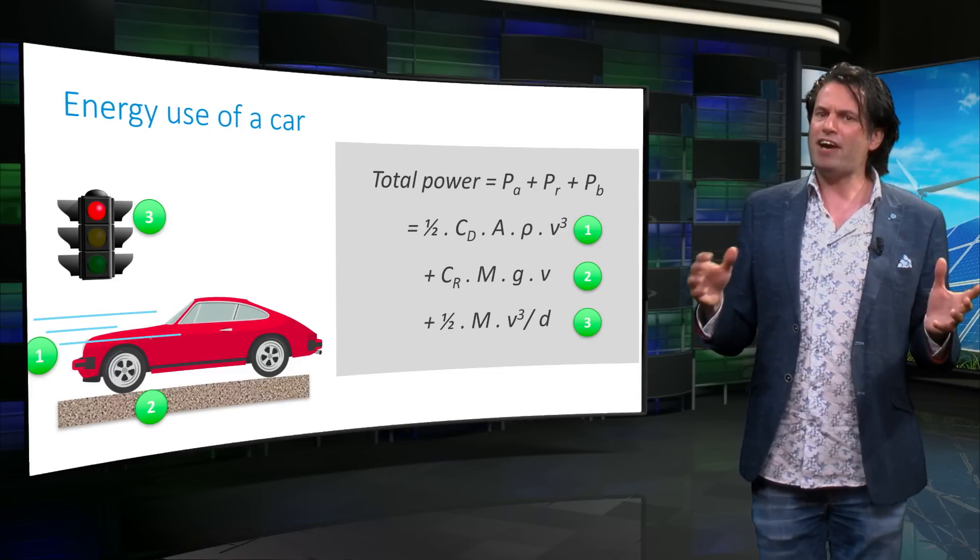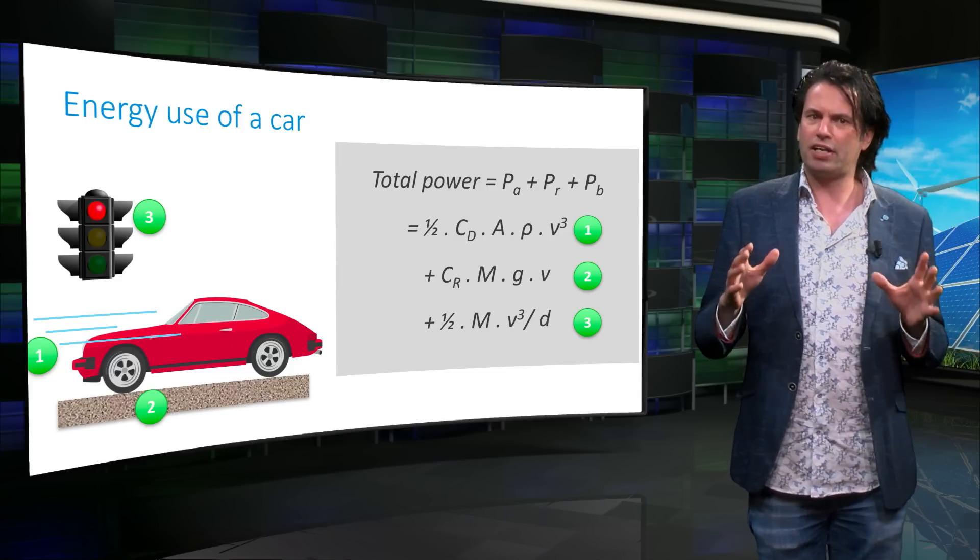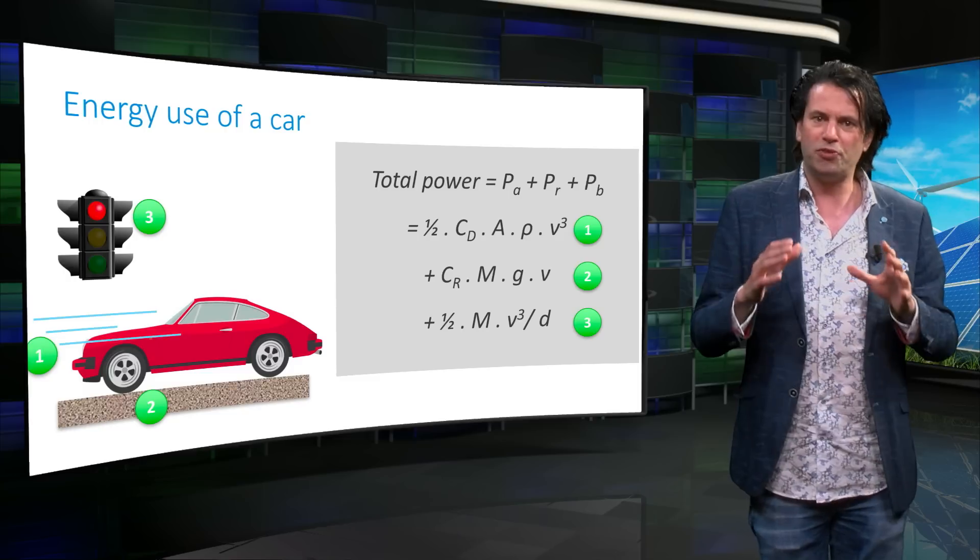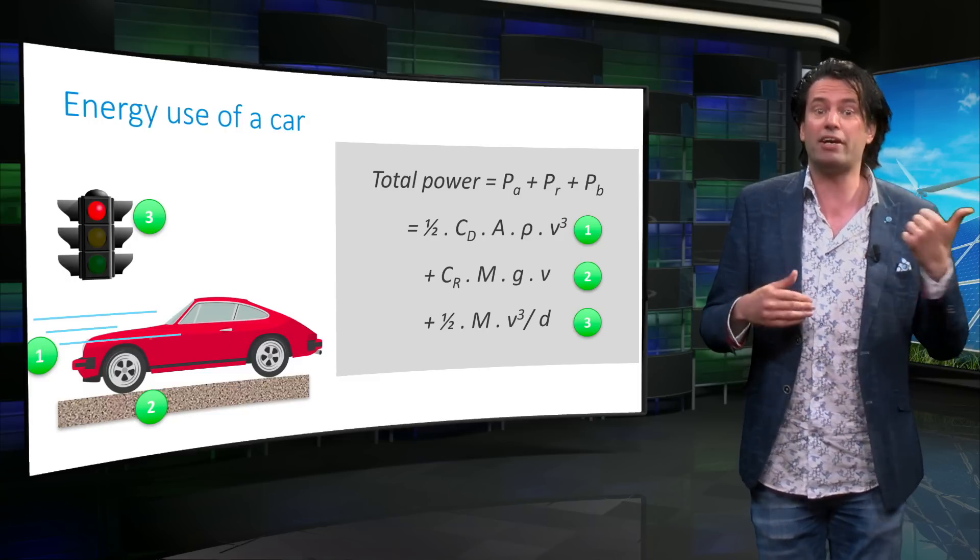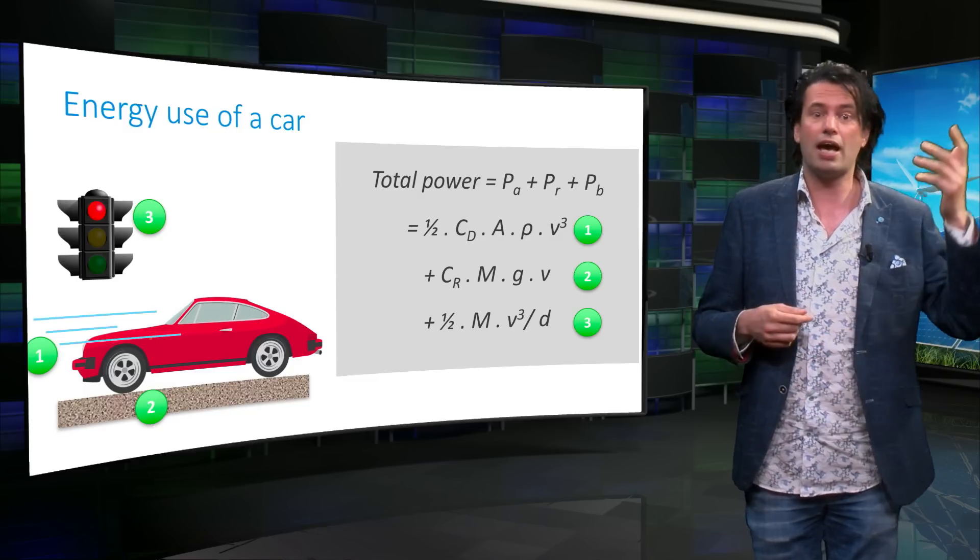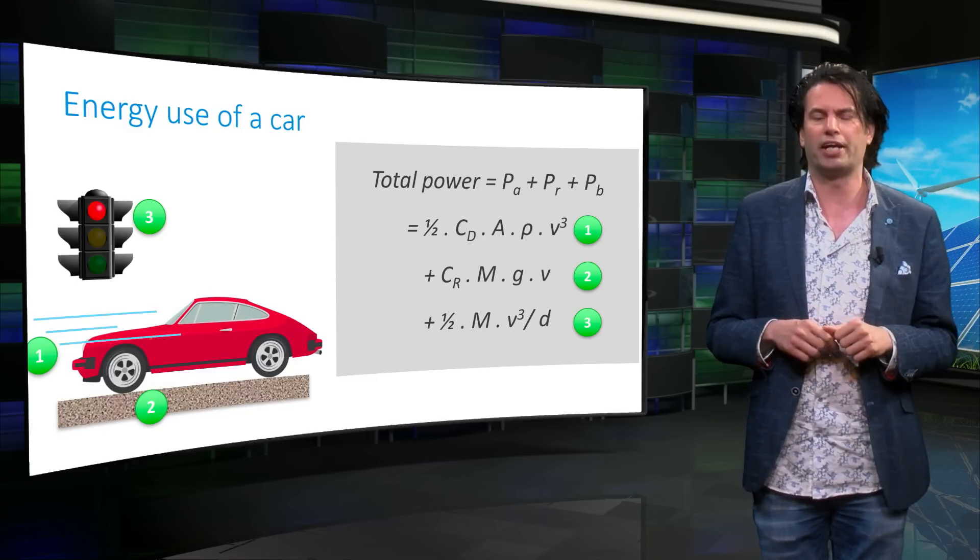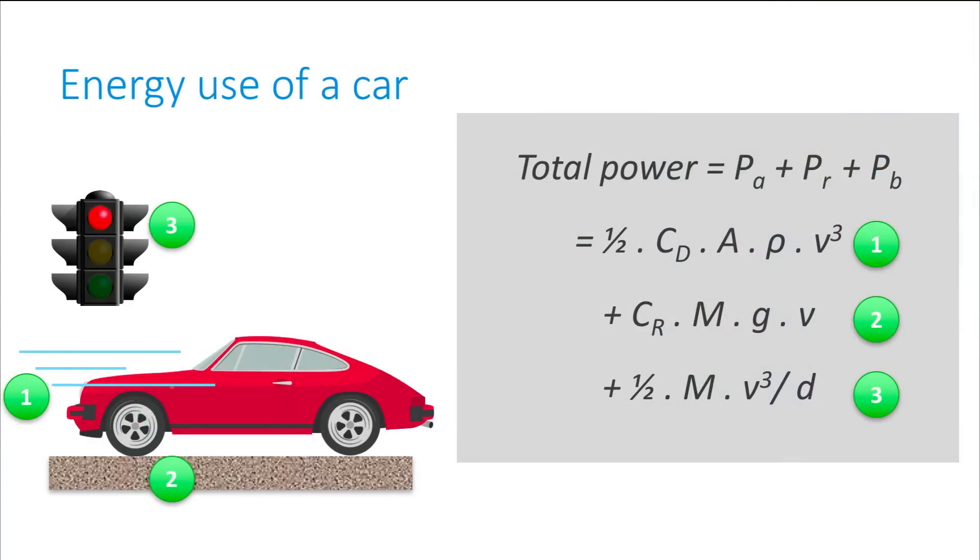Thus the rough estimation of the total power that a car engine needs to move between two points is the sum of the power required to overcome air resistance, rolling resistance, and power required for braking. Let us now take a look at how each of these terms vary depending on the driving conditions and the car by plugging some realistic numbers into these equations.